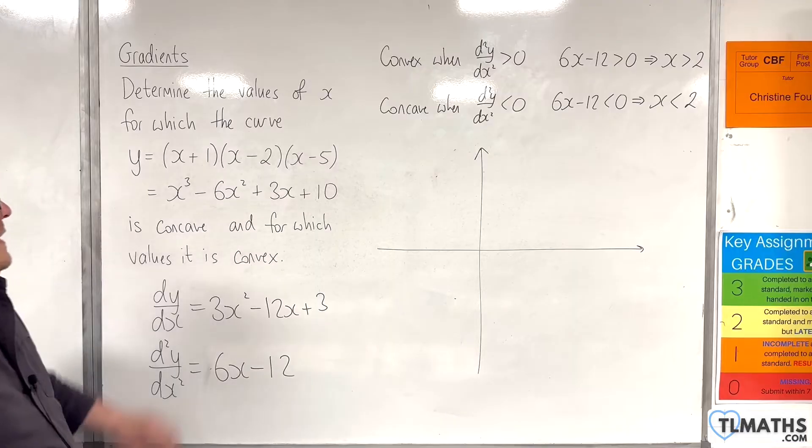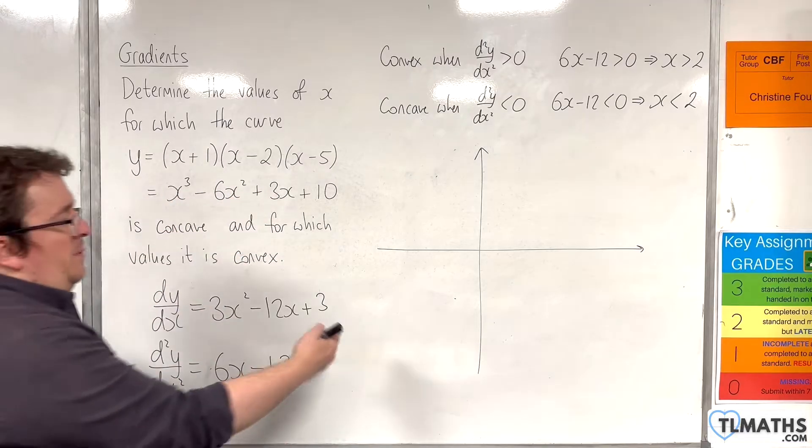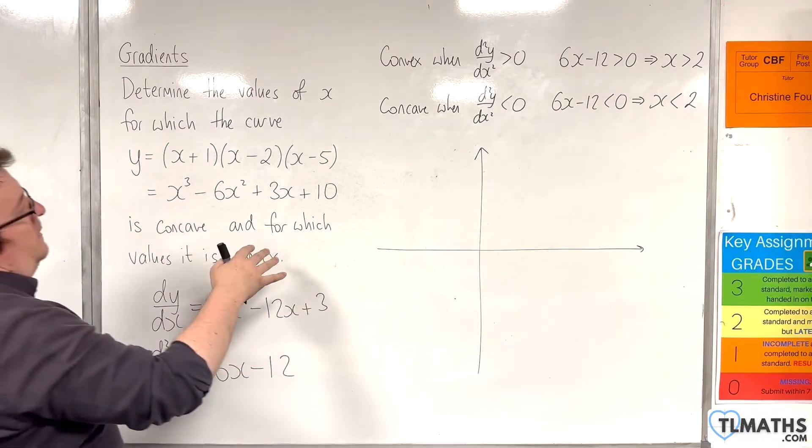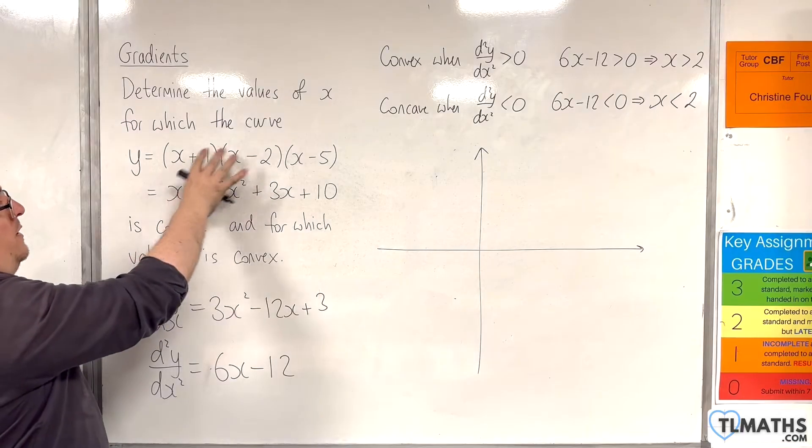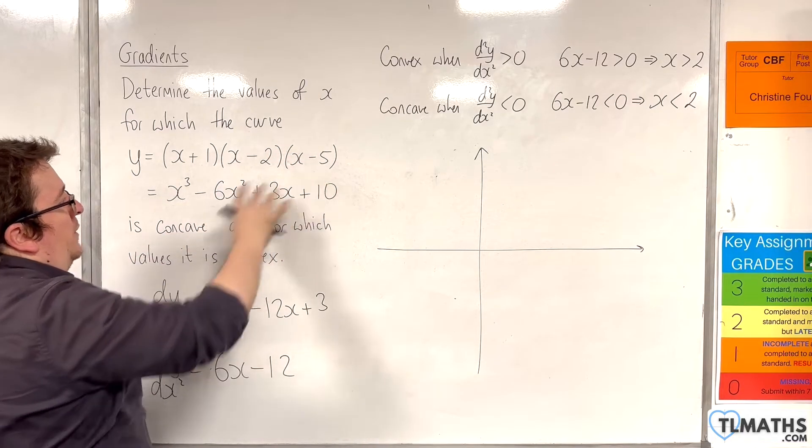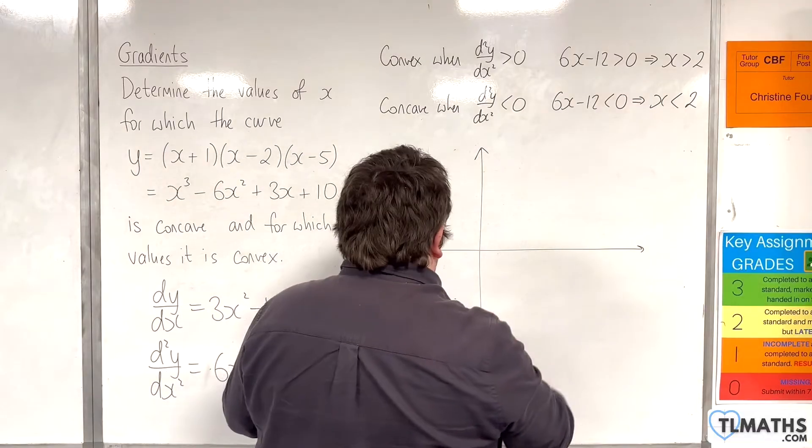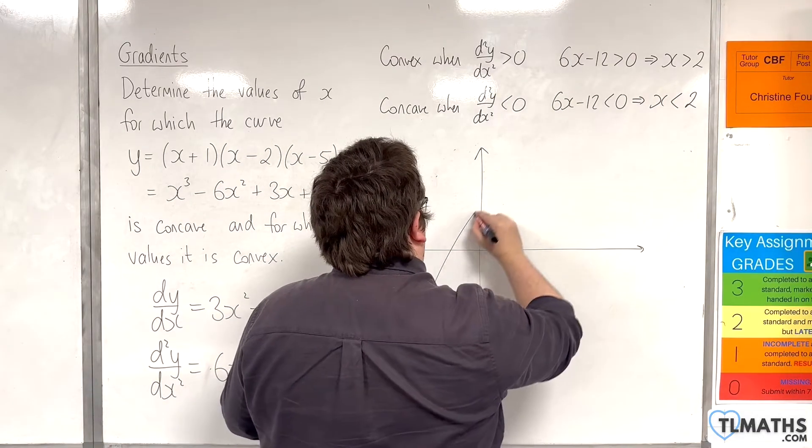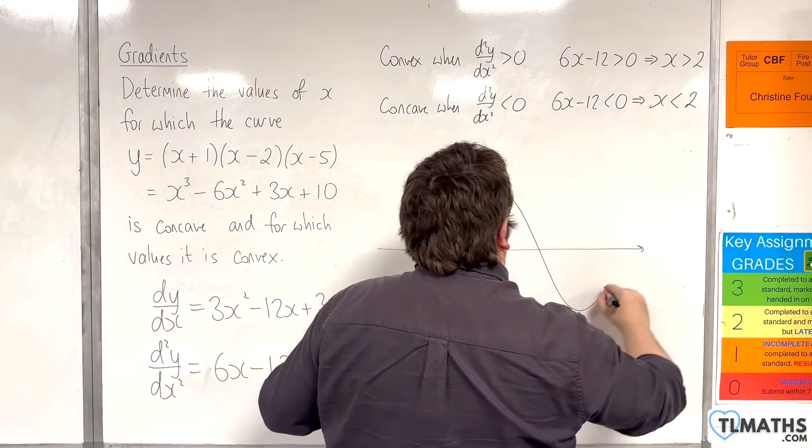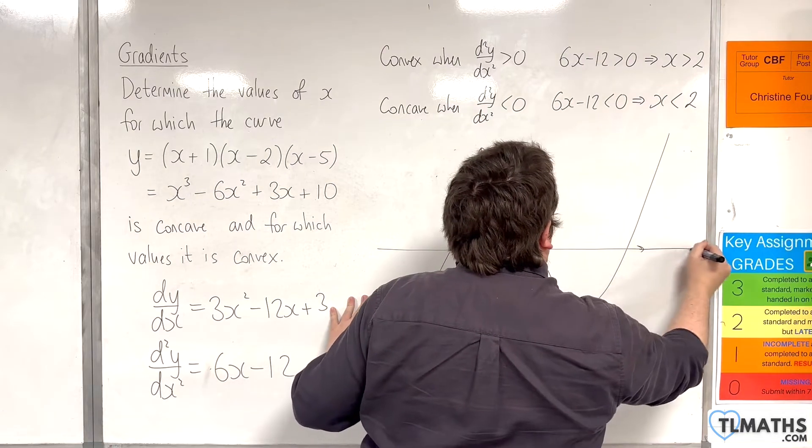So, we have a cubic curve, so it starts at the bottom left, works its way to the top right, and it's going through -1, 2, and 5 on the x-axis. So, -1, 2, 5 on the x-axis.